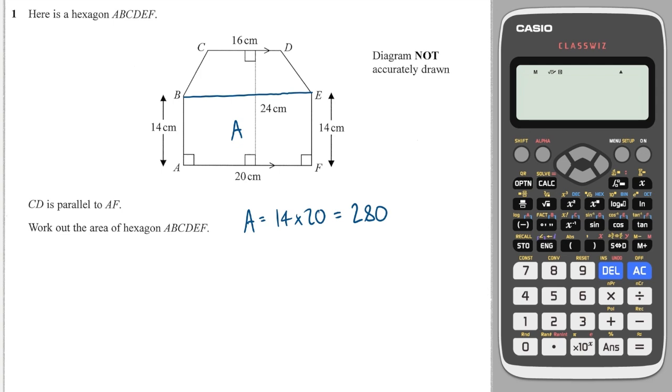And the shape at the top here, let's call it B, is a trapezium. Now you're given the formula for trapezium in your formula sheet. And it's a half A plus B multiplied by H. A plus B are the two parallel sides. In this case, we have 20 and we have 16 parallel to each other. So we write 20 plus 16 in here.